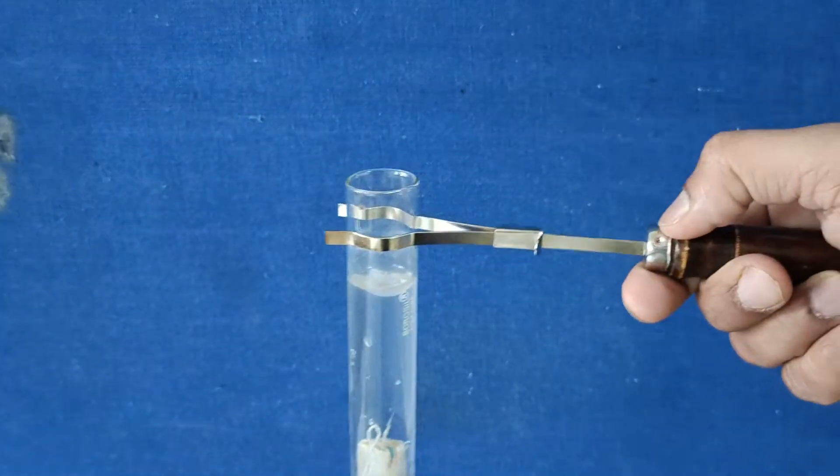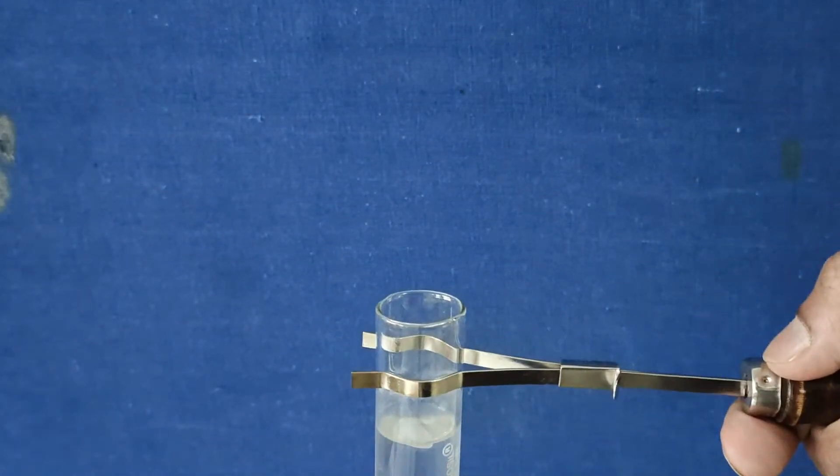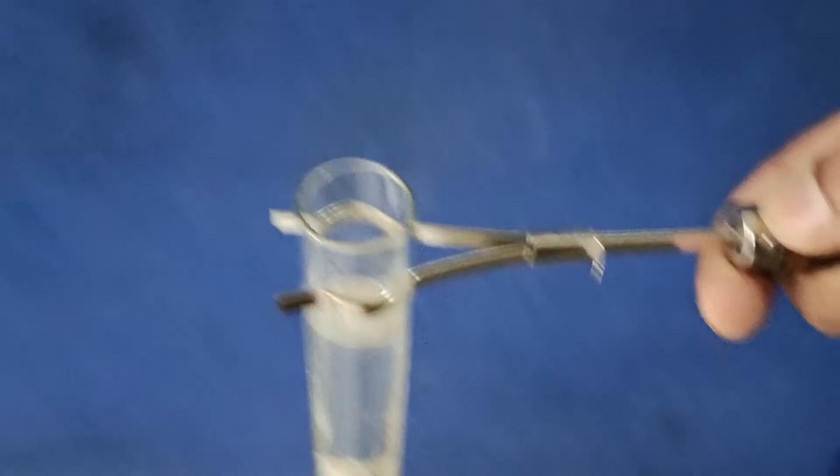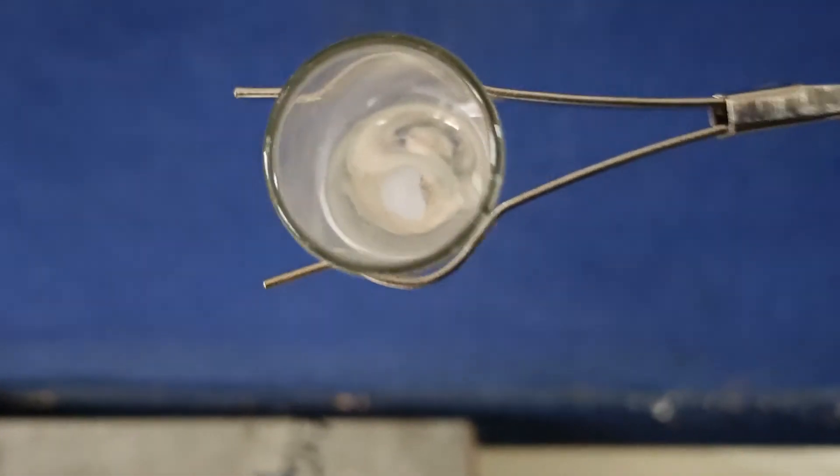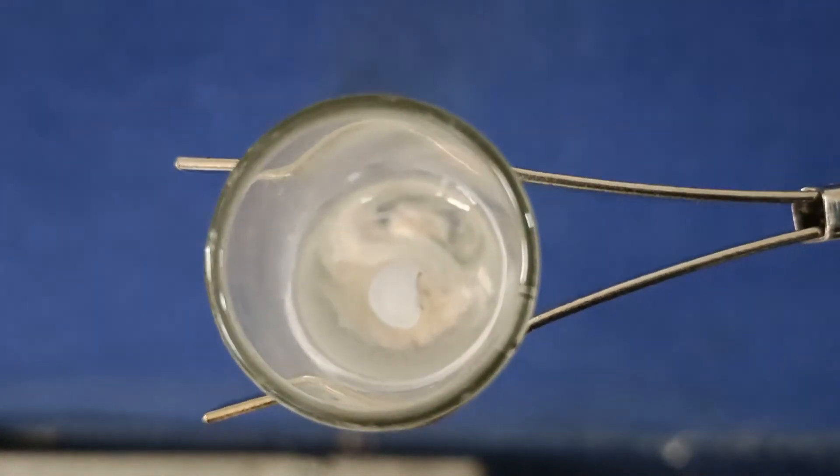We observe that the candle wax at the top melts but not at the bottom. Thus, water does not allow the heat to travel downwards, hence it is a bad conductor.